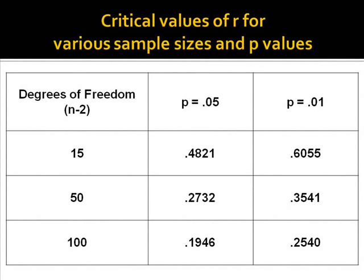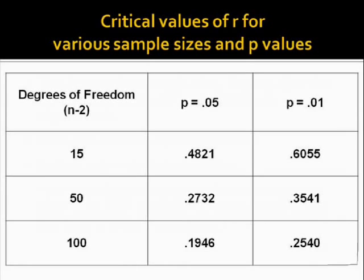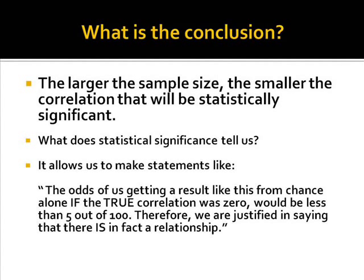Here is a table that approaches the issue of statistical significance of r from a different angle. Here we see values of r that would be considered statistically significant for different degrees of freedom and for different levels of significance. Take a moment and look at the impact of sample size, degrees of freedom, on the values of r that would be considered statistically significant. Look at the numbers in the columns. The conclusion from this table is that the larger the sample size, the smaller the correlation that is necessary to be statistically significant.